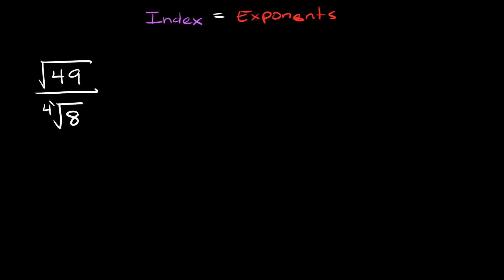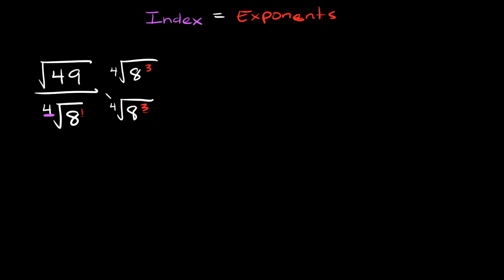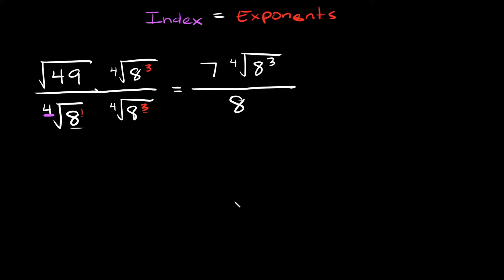So here we have the square root of 49 over the fourth root of 8. This 8 is basically 8 to the first power. In order to rationalize this denominator, we're going to multiply the top and the bottom by the fourth root of 8 cubed. Our index is 4, and now our exponents also equal 4 — we had a 1 to begin with, and now we add 3, so 1 plus 3 equals 4. Multiplying out: the square root of 49 is 7, so on top we have 7 times the fourth root of 8 cubed, and that's over just 8, since everything cancels out.